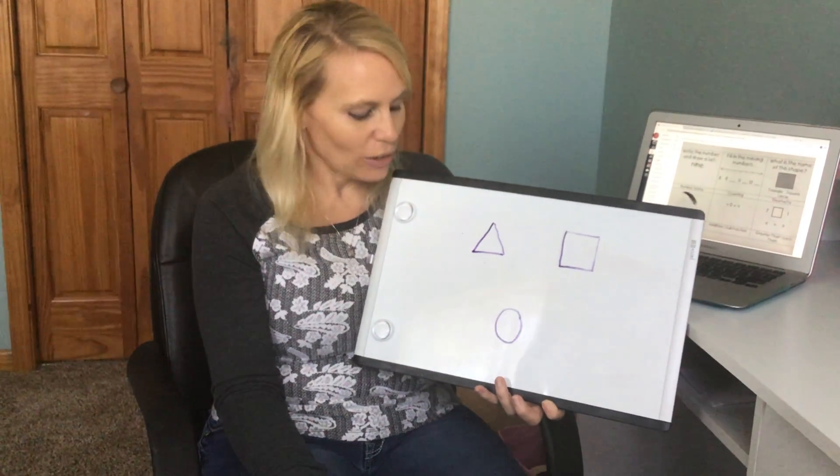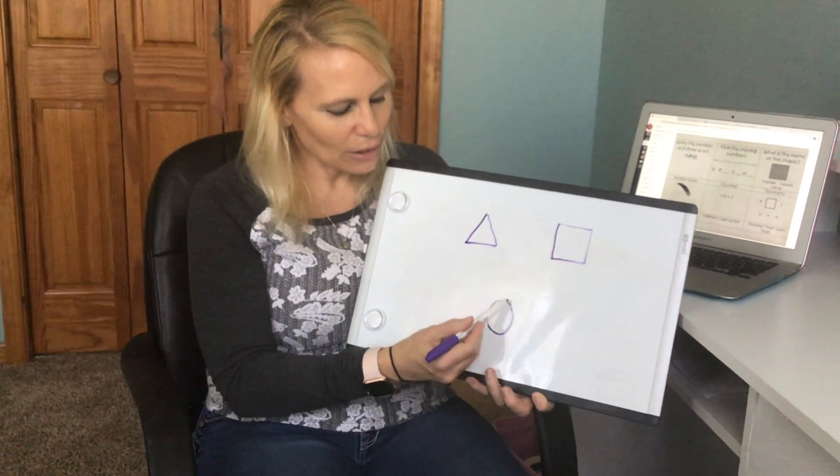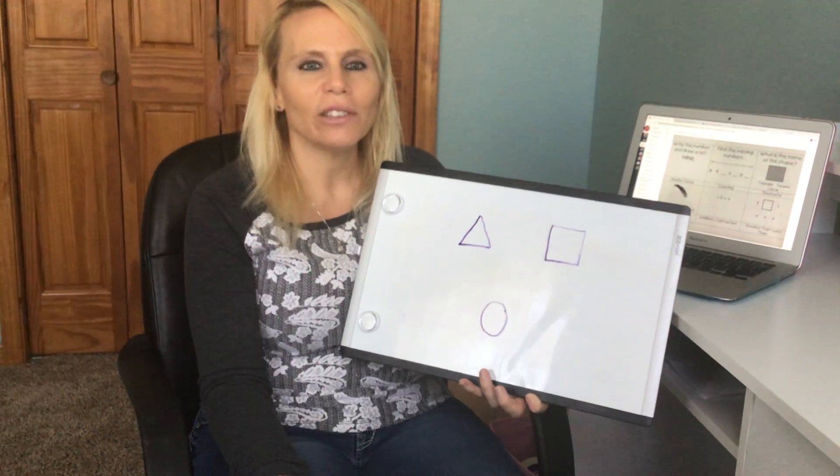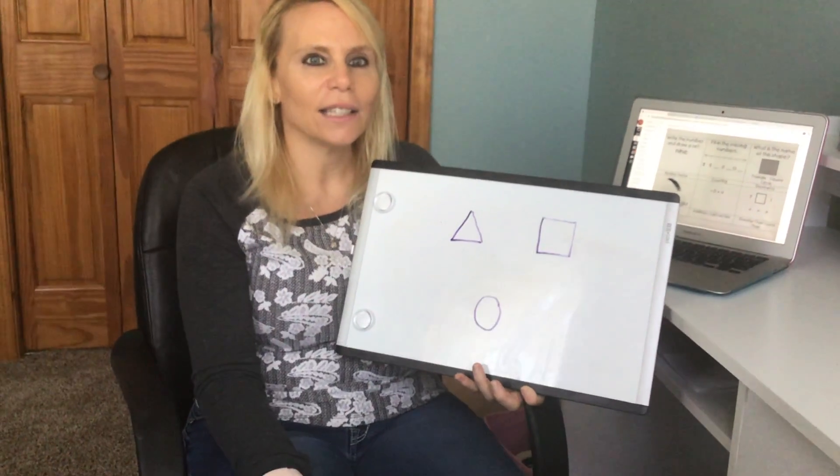And your last choice says circle. This is a circle. A circle has zero sides - it goes all the way around with zero sides.